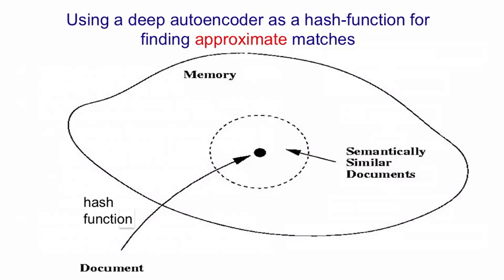You simply take the query document, go to the address in memory that corresponds to its binary code, and then look at nearby addresses. In other words, you start flipping bits in that address to access nearby addresses, and you can imagine a little hamming ball of nearby addresses that differ by just a few bits. What we expect to find at those nearby addresses is semantically similar documents. So we've completely avoided searching a big list — we simply compute a memory address, flip a few bits, and look up the similar documents. It's extremely efficient, especially if we have a very large database of, say, a billion documents.